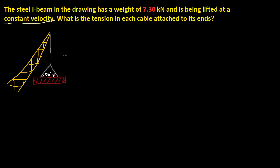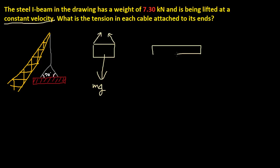Let's draw a free body diagram and see what we get. We have a downward force of mg, and we have our two tension vectors going up and outward. Breaking down those vectors, mg points down, and the two cable tensions each have components going upward and inward.